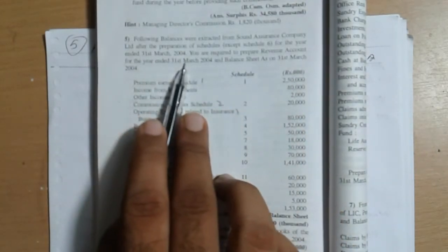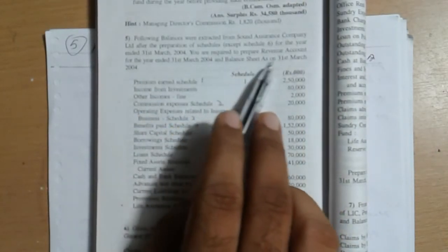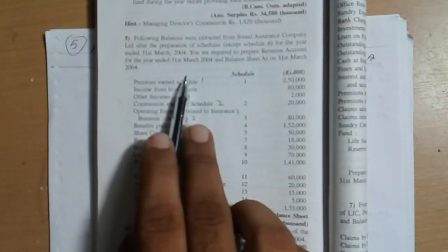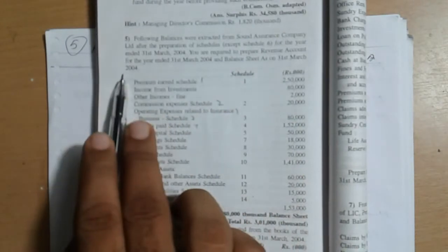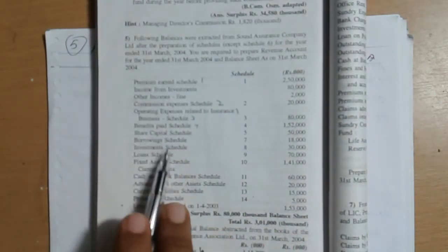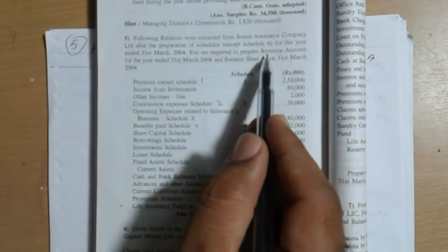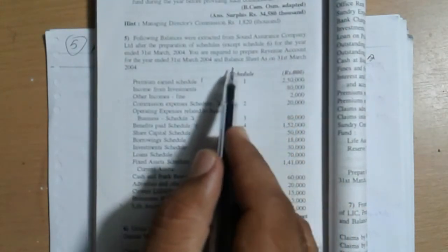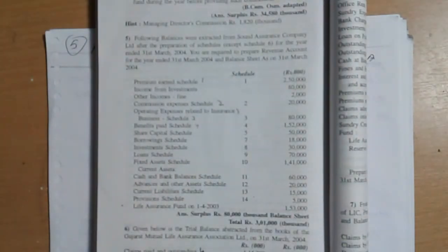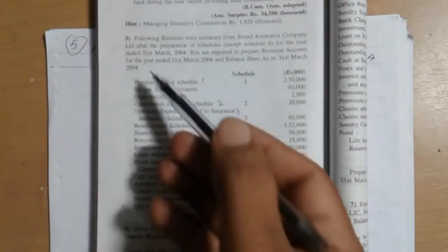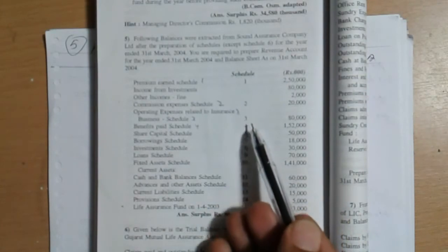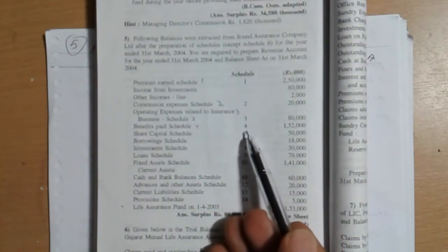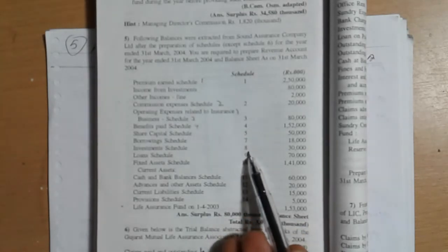You are required to prepare a revenue account for the year ending 31st March 2004 and balance sheet as on 31st March 2004. So three things to prepare: revenue account and balance sheet for 31st March 2004. Following the lines of new information given first, second, third, fourth. Schedule will appear in revenue account.